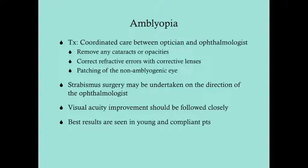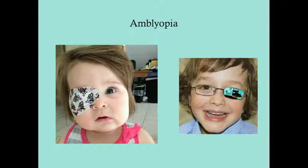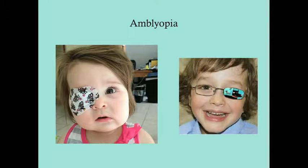Surgeries can be done if strabismus is the cause, at the direction of the ophthalmologist. Visual acuity improvement should be followed closely — amblyopia is a difficulty with seeing detail, and the optometrist can follow that. The best results are seen in young patients who still have neuronal plasticity and in patients who are compliant with treatment. These images show children with eye patches; a child on the right has a refractive error and is also wearing glasses. All children with refractive errors should have glasses or contacts. Patching the dominant, non-diseased eye forces the bad eye to create neuronal connections.